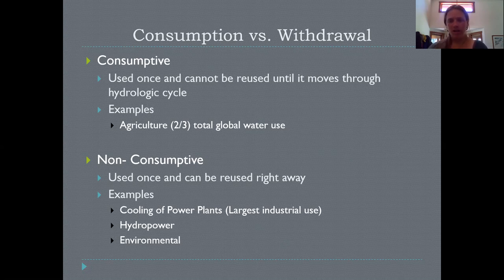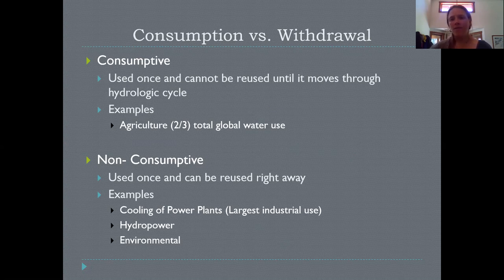Of course, a lot of the water molecules are not disappearing — they might go back up into the sky, form clouds, and come back down as precipitation. But we don't have a hold on that pool of water anymore. This would be agriculture: if we water our fields, we can't capture the water beneath the roots and put it into some other use after that. Once we use it, it's gone.